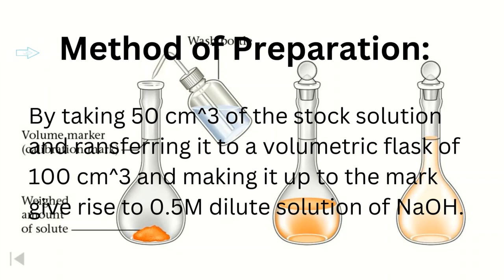Preparation of solution: by taking 50 cubic centimeters of the stock solution and transferring it to a volumetric flask of 100 cubic centimeters and making it up to the mark will give rise to 0.5 M dilute solution of NaOH.